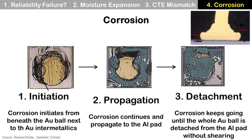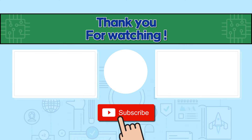Corrosion is degradation of material by chemical reaction at high temperature and high moisture environments. It is a type of reliability failure. These photos show corrosion at the interface between the gold ball bond and the bond pad on the die surface. Step 1: corrosion initiates from under the gold ball. Step 2: corrosion continues and propagates to the aluminum pad. Step 3: corrosion keeps going until the whole gold ball is detached from the aluminum pad.